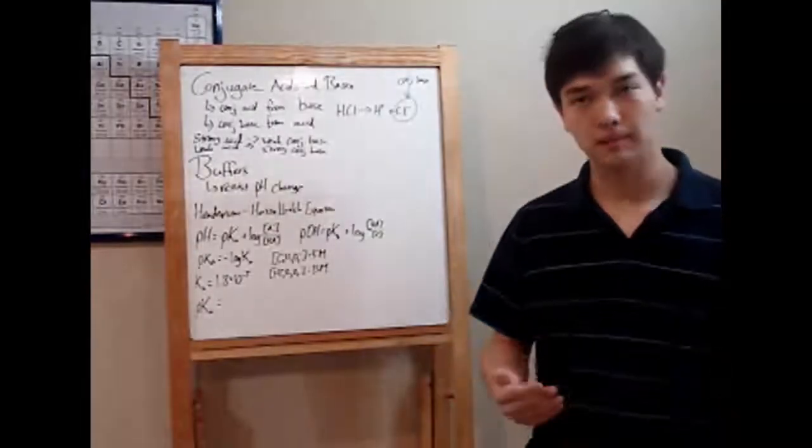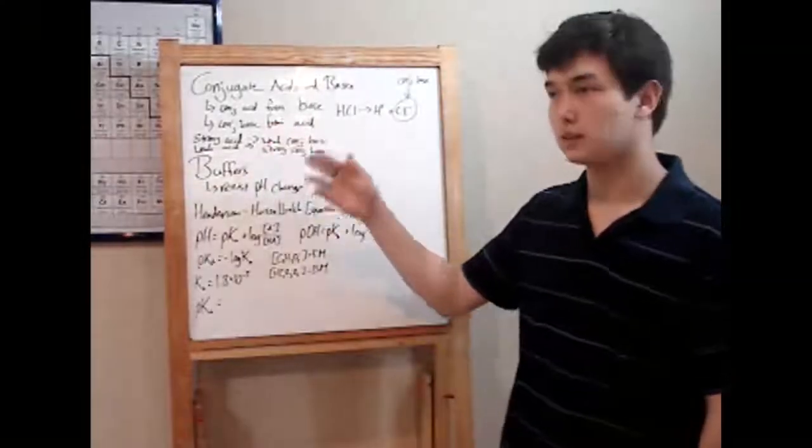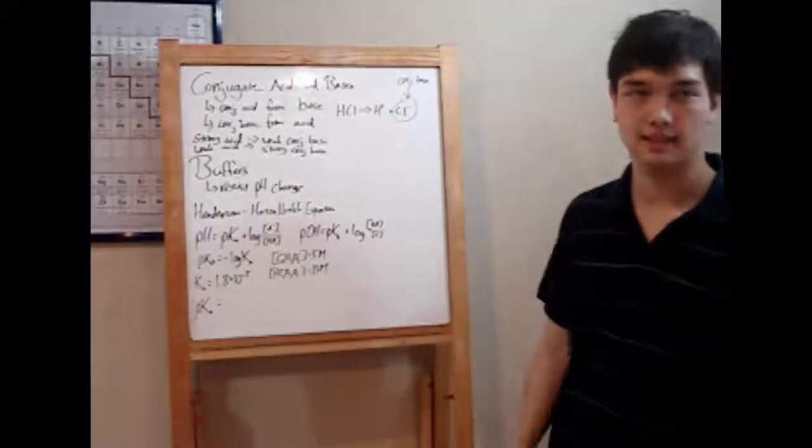Conjugate acids and bases are the result of the acid or base dissociating. You get a conjugate acid when a base dissociates, and you get a conjugate base when an acid dissociates.